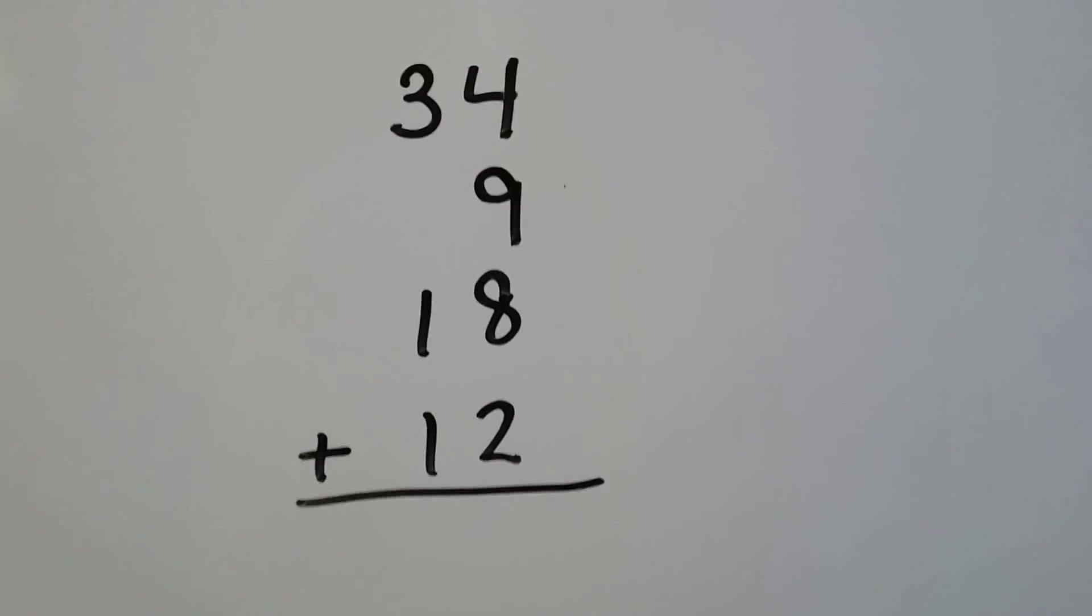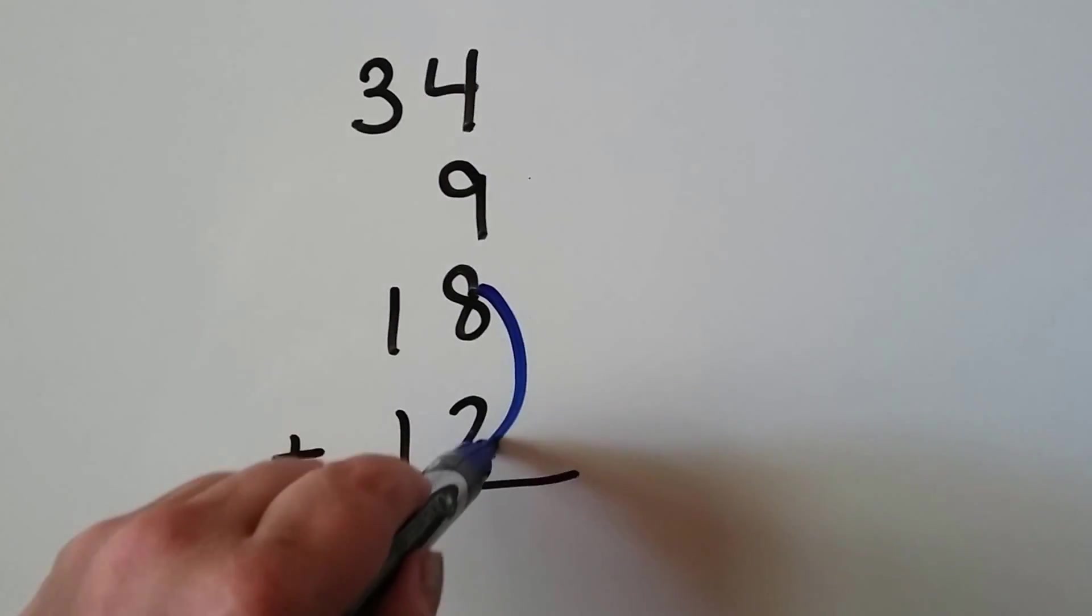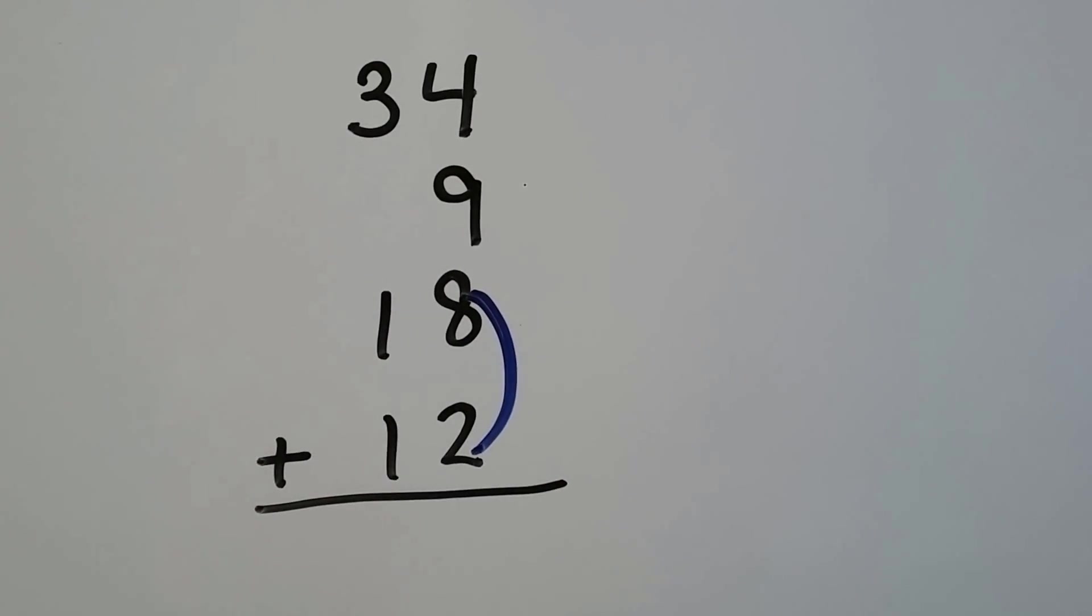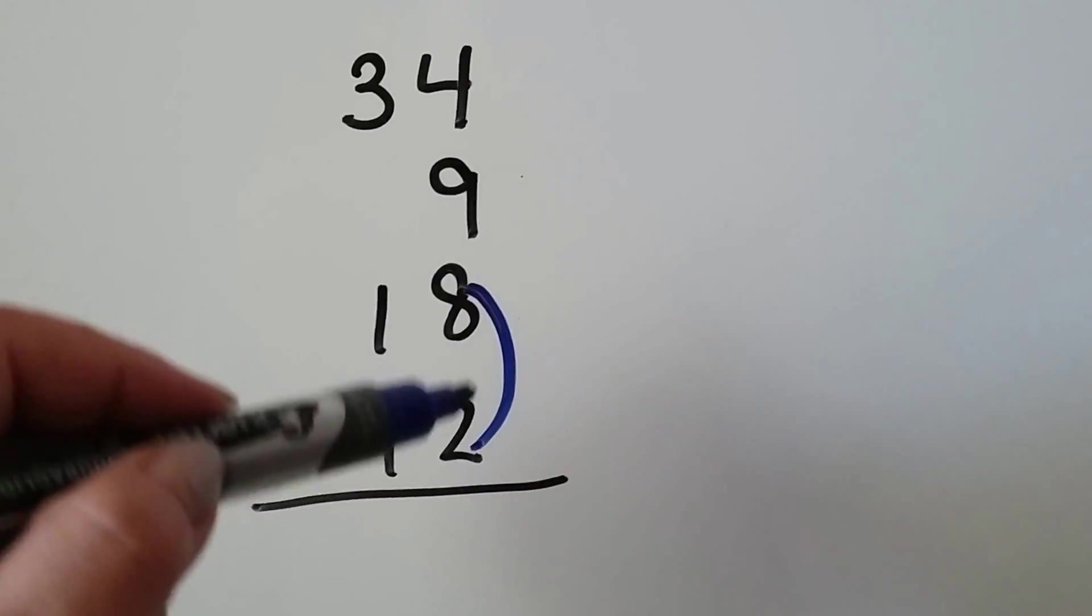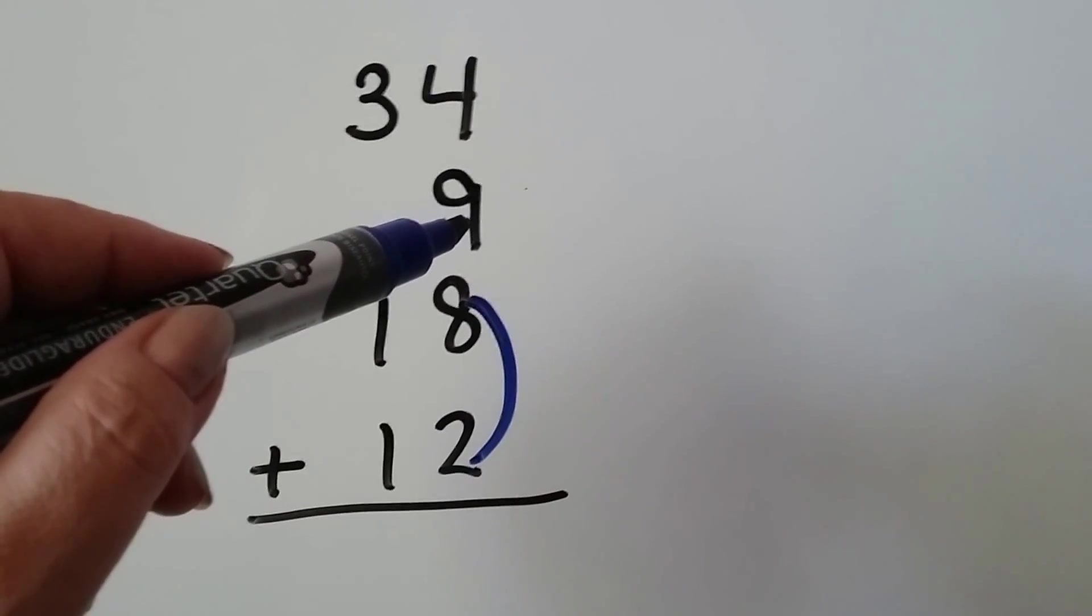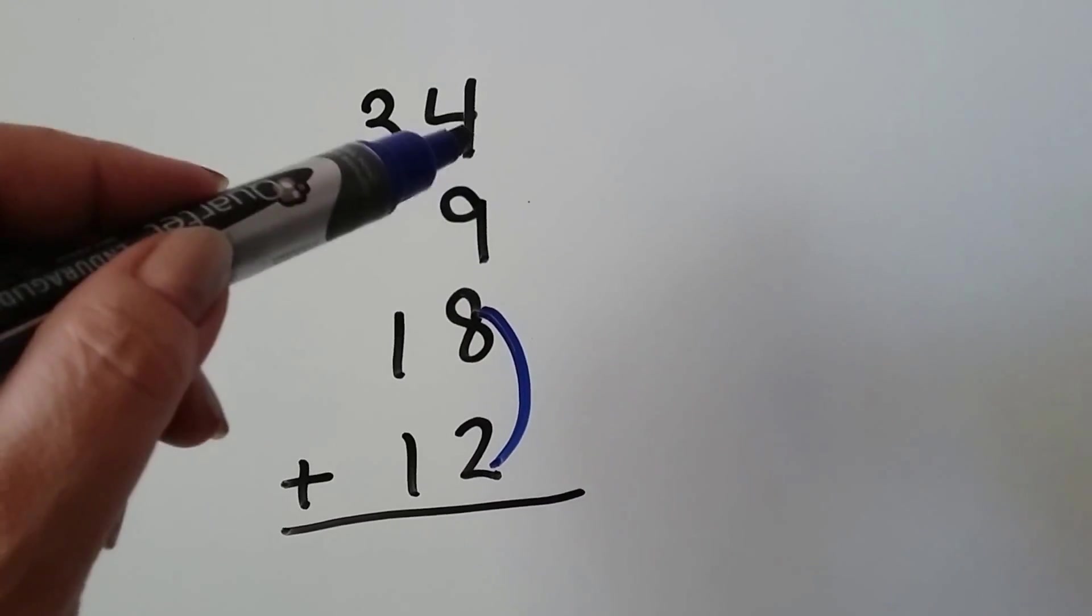I do in the ones place. I see the 8 and the 2. 8 and 2 is 10, isn't it? Now we can add the 9. 10 plus 9 is 19.